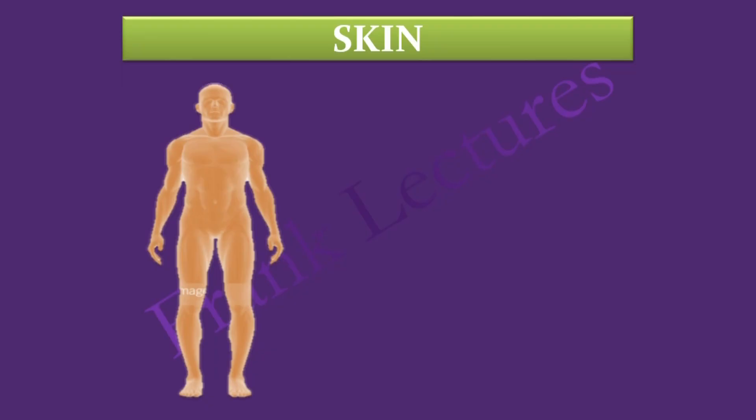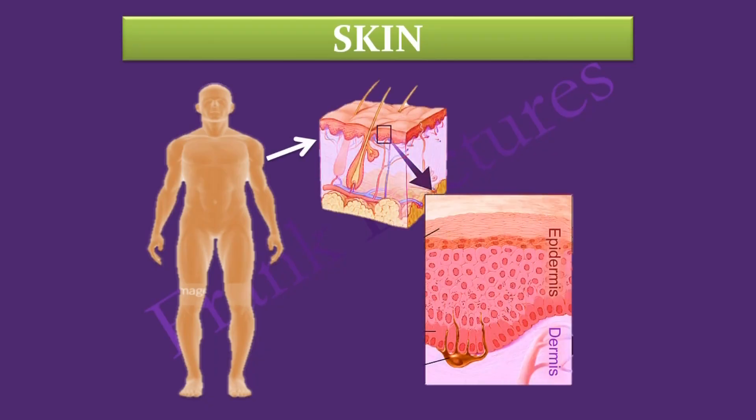Skin is the body organ with the greatest surface area, and it provides the major barrier to pathogens. Skin consists of two parts: the outer part is known as the epidermis, and the deeper part is known as the dermis.